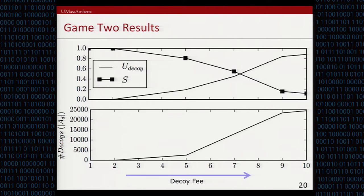Let's look at the results for the second game. The first thing to look at is the impact of the decoy fee on the performance of the decoy routing system. The decoy fee is the amount of money charged per unit of decoy traffic. Intuitively, with an increasing decoy fee, more autonomous systems will be willing to become decoy autonomous systems given the risk of losing transit traffic. Therefore, by increasing the decoy fee, the censorship resistance metric will improve.